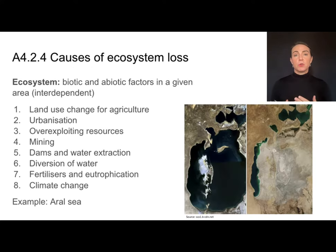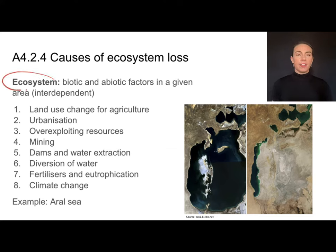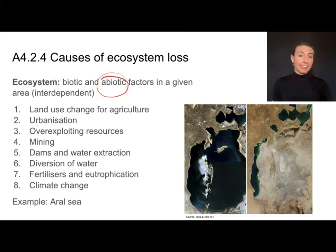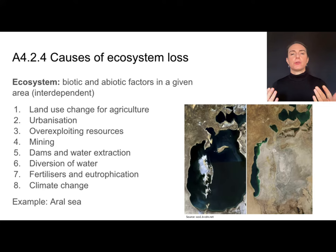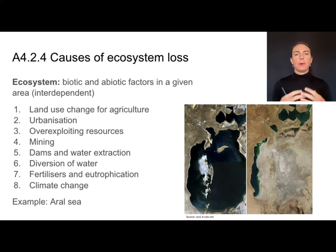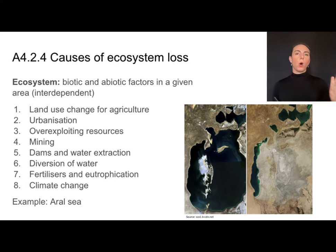Some of these human activities cause ecosystem loss. An ecosystem can be defined as the biotic — that is, the living — and abiotic — that is, non-living — factors in a given area. Biotic features would be plants, animals, fungi, and bacteria. Abiotic factors would be things like water, sunlight availability, and rocks.